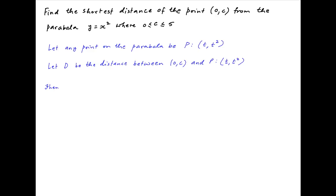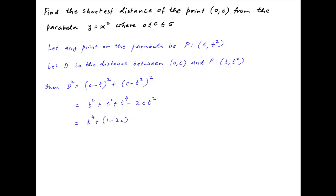Therefore d² is equal to (0 − t)² + (c − t²)². The first term on the right-hand side is equal to t², and the second term can be expanded as c² + t⁴ − 2ct². This can be written as t⁴ + (1 − 2c)t² + c².